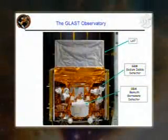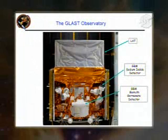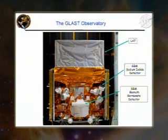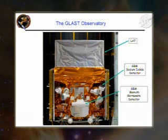Finally, there's the GLAST burst monitor, or the GBM. The GBM's primary science goals are to connect the frontier energy measurements that the LAT is going to make with a much better studied energy regime at lower energy that previous NASA and other worldwide satellites have told us about. So the GBM will connect the breakthrough LAT energy measurements with the previously understood energy range. In addition, gamma ray bursts appear unpredictably from anywhere on the sky, and the GBM observes the whole sky, so that will be a very important aspect as well.